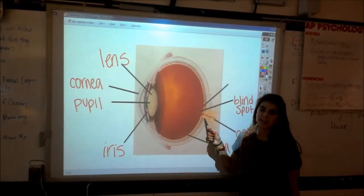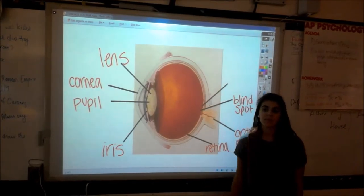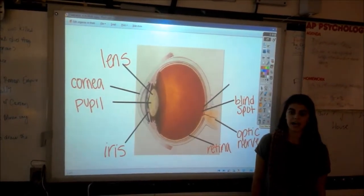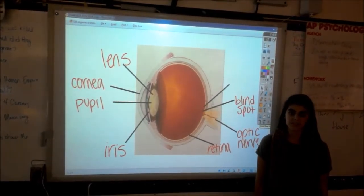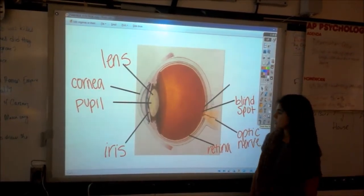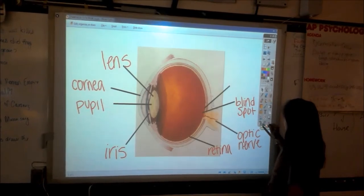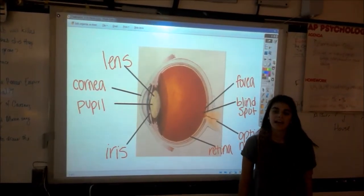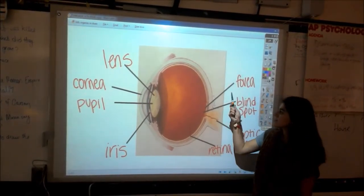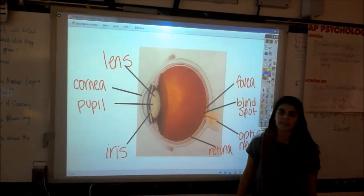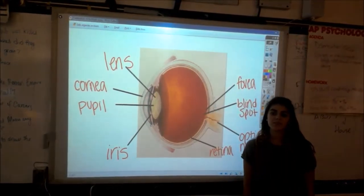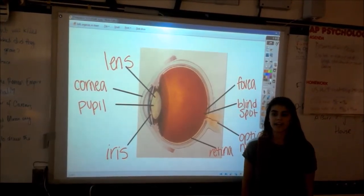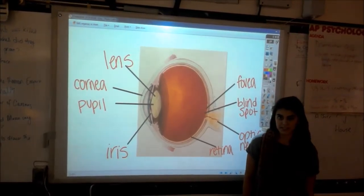This is the blind spot. It is the point at which the optic nerve leaves the eye, and no receptor cells are located here. And lastly, we have the fovea — it is the central focal point in the retina around which the eye's cones cluster.